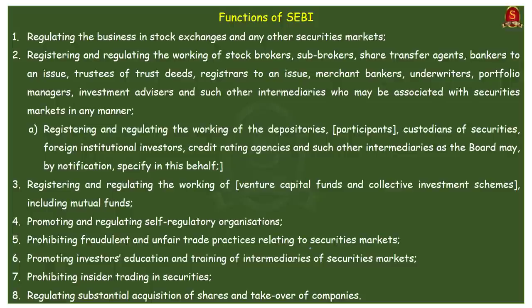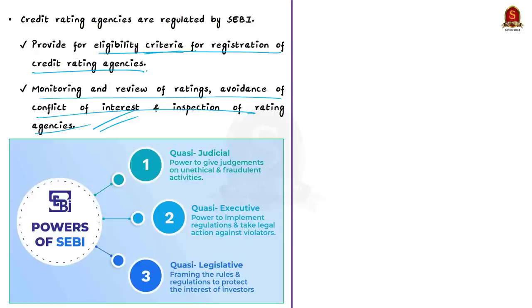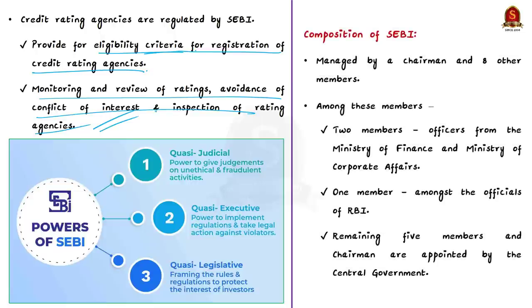Some other functions of SEBI are mentioned on screen. Credit rating agencies are regulated by SEBI — the SEBI Regulations 1999 govern credit rating agencies and provide for eligibility criteria for their registration, monitoring and review of ratings, and inspection of rating agencies by SEBI. SEBI performs a triple function as a quasi-legislative, quasi-judicial, and quasi-executive body: it drafts regulations in its legislative capacity, conducts investigation and enforcement action in its executive function, and passes rulings and orders in its judicial capacity.